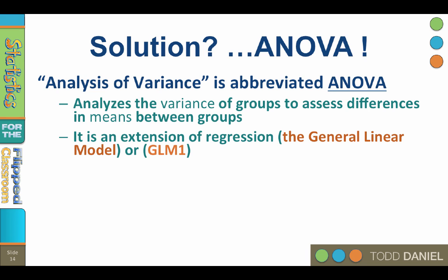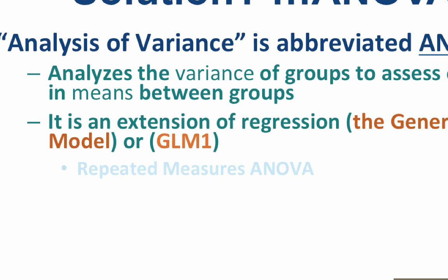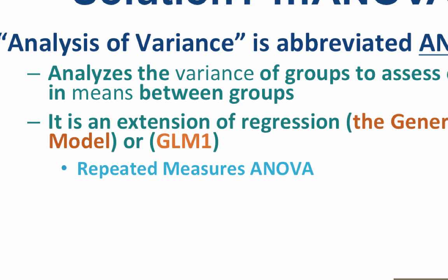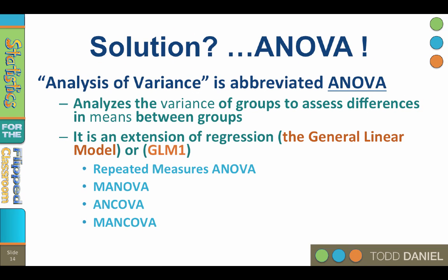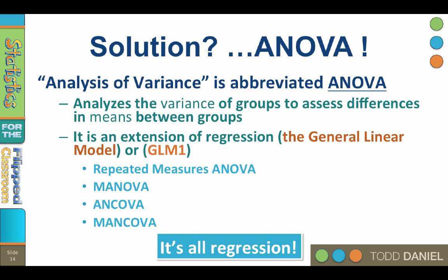You have options. The General Linear Model can be used with both independent groups or related groups, called the repeated measures ANOVA. The GLM can be used with multiple independent variables or multiple dependent variables, called a MANOVA. The GLM can include covariates as a control, called an ANCOVA, or a MANCOVA with multiple variables. The General Linear Model is actually a special form of regression — so in reality, everything we are doing with hypothesis testing, from z-tests to t-tests to correlation to ANOVA, is all regression under the hood.